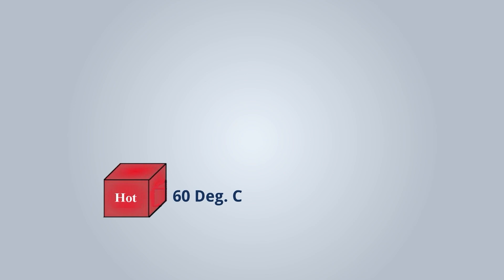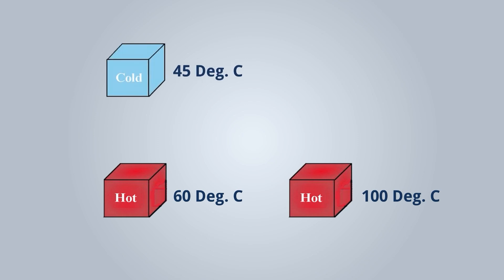Now let us consider a hot body at 60 degrees Celsius temperature, and another hot body at 100 degrees Celsius temperature. One cold body is at 45 degrees Celsius, and here also one cold body is at 45 degrees Celsius.